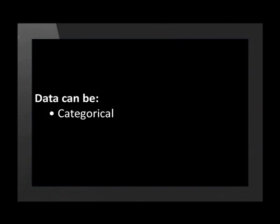Data can be classified as categorical or numerical. Categorical data is data that describes a property — for example, race, gender, types of cars, and yes or no responses.